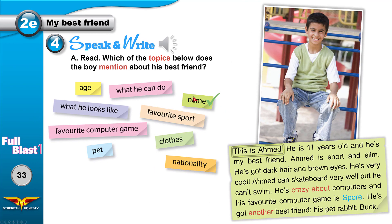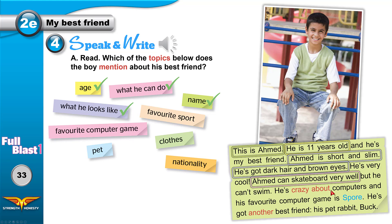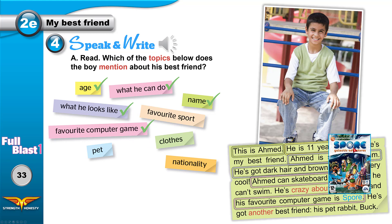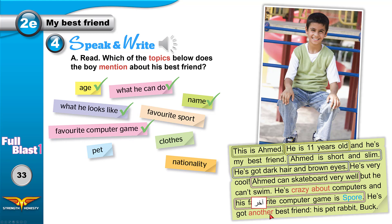This is Ahmed — that's the name. He mentions the name; 11 years old — he mentions the age. Short, slim, dark hair, brown eyes — that's how he looks. Can skateboard — what he can do. Crazy about computers and his favorite computer game — tick that. He's got another best friend — 'another' means one more. His pet rabbit — that's the pet. Buck is the name of the rabbit.